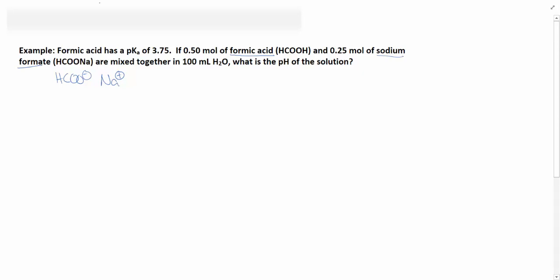The next thing to check is whether or not we have a buffer. We know we have a buffer when we have a weak conjugate acid and its conjugate base, which is what we have. They also need to be in similar concentrations, similar amounts in the solution, which we define as at least a 10 to 1 ratio. So here we have 0.5 moles of acid and 0.25 moles of its conjugate base. That's a 2 to 1 ratio, which is at least a 10 to 1 ratio, so this is indeed a buffer.